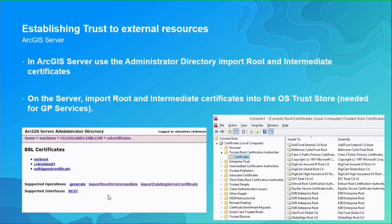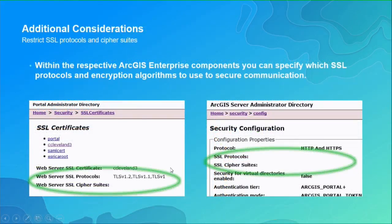An important consideration: ArcGIS Server running a GP print service may also need certificates imported into the operating system itself, because GP services run Python code at the OS level. Additionally, in highly secure environments you can restrict ArcGIS Enterprise to TLS 1.2 only and adjust the specific cipher suites used for encryption — both configurable through the portal and ArcGIS Server admin endpoints.